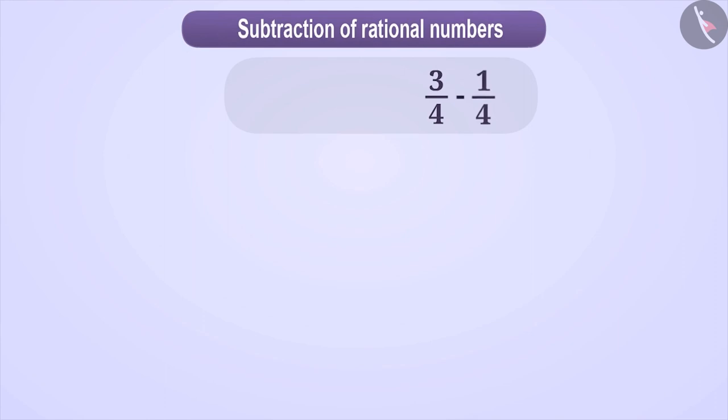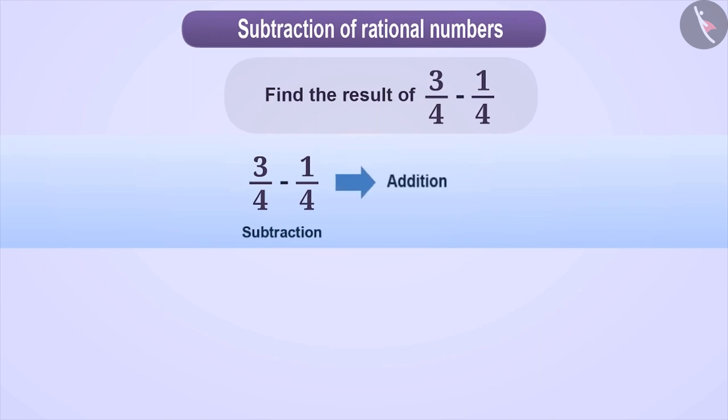Let's find the result of 3/4 minus 1/4. To find the result, we convert the operation of subtraction into the operation of addition. For this, we keep the first number as it is, then change the sign of subtraction to addition and then add the additive inverse of the second number.